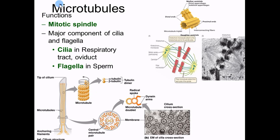One place you find microtubules is in the mitotic spindle. During cell division — mitosis — the mitotic spindle sits at the poles of the cell, north pole and south pole. In an electron microscope image, you can see the poles with green microtubules branching out to the equator, where chromosomes are aligned. The centrioles in the mitotic spindle pull on the microtubules and rip the chromosomes apart to separate one cell into two.